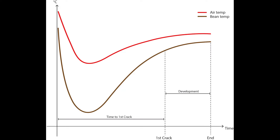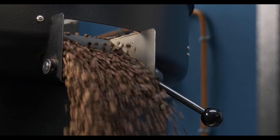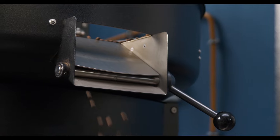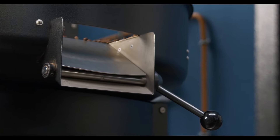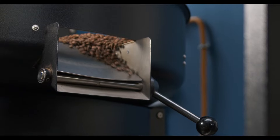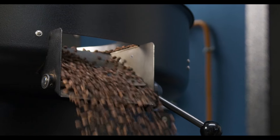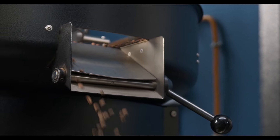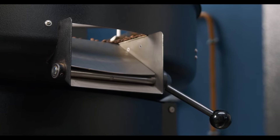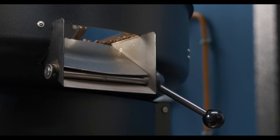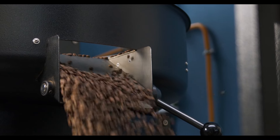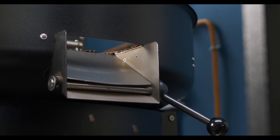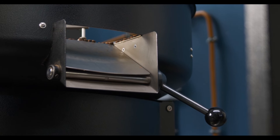During the roasting process the coffee roaster will be continuously monitoring the temperature and the colour of the beans, adjusting the heat and the airflow as necessary to achieve a consistent roast. It is important to keep in mind that the roasting process is a delicate balance between temperature, time and airflow, and small adjustments can make a big difference in the final flavour of the coffee.